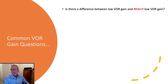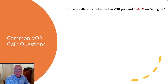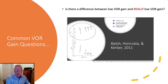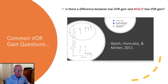A common question I get is about the difference between low gain and really low gain. This is probably best answered by a study that Baylor and his colleagues did in 1984, but was republished with clarity of means and standard deviations in 2011.